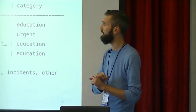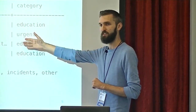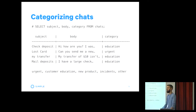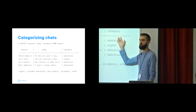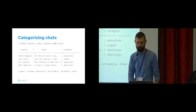The categories you might assign include urgent, customer education, new product, incidents, and other things. This is a great situation for machine learning — we have this data warehouse with hundreds of thousands of chat messages we can look at and have a machine process. Subject and body are the input features, and category is the answer we want to get out. The problem we want to solve is automatic categorization. We already have this large corpus where humans have tagged things, and we can use this as a training data set for figuring out if our approach works.